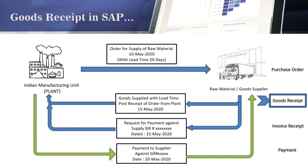First, we need to understand what documents are required in this step. When any vendor who has been issued a PO is supplying material to your warehouse, along with the material — whether raw material or spares — he needs to send a copy of the PO issued to him. It's not mandatory, but in general practice it is recommended to send the PO copy along with the material.